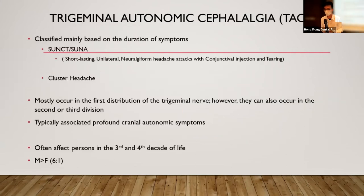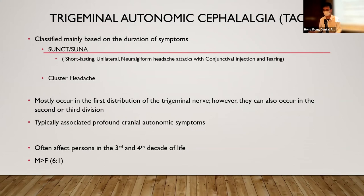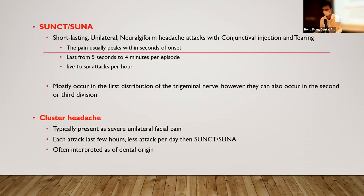This is a trigeminal autonomic cephalalgia, TAC, which is a primary headache disorder. The classification of TAC is based on the duration of symptoms — the most common is cluster headache. A rare type is SUNCT — short-lasting unilateral neuralgiform headache attacks with conjunctival injection and tearing. All kinds of headaches under TAC occur in the first distribution of the trigeminal nerve, though some cases can occur in the second or third division. They should be associated with prominent autonomic symptoms and peak in the third to fourth decade of life, with male predominance.